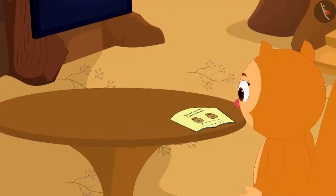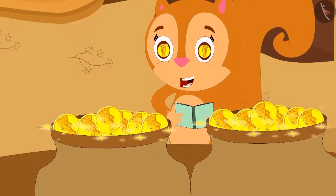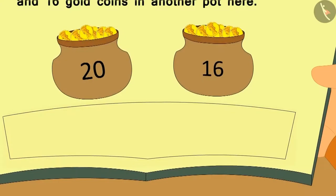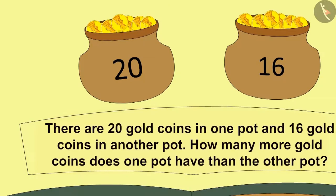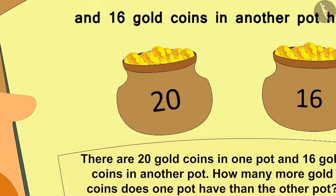Suddenly, the two pots filled with gold coins appeared in front of Chanda. Chanda was not able to believe her eyes. Children, can you make another question as well on this? Absolutely right! There are 20 gold coins in one pot and 16 gold coins in another pot. How many more coins are there in one pot than the other? Likewise, we can make a subtraction puzzle as well.